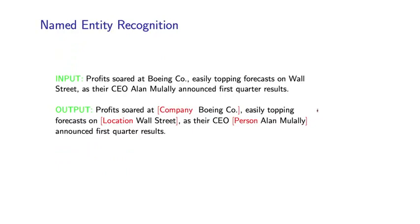Here is a second example of a tagging problem: named entity recognition. This is a very important problem in NLP — in the first programming assignment for this course, you will build a complete named entity recognizer. The problem is to take a sentence, a sequence of words, as input, and in the output identify named entities such as a company, a location, or a person.